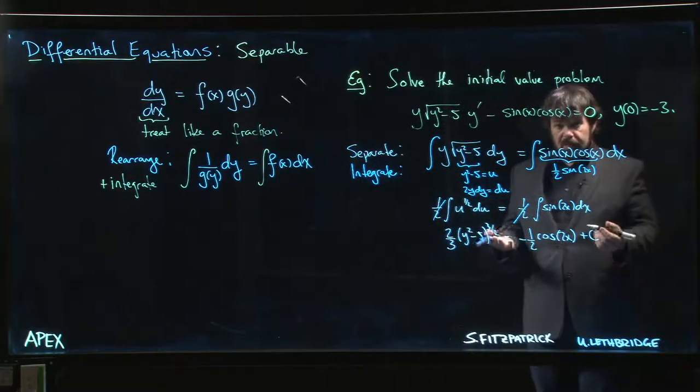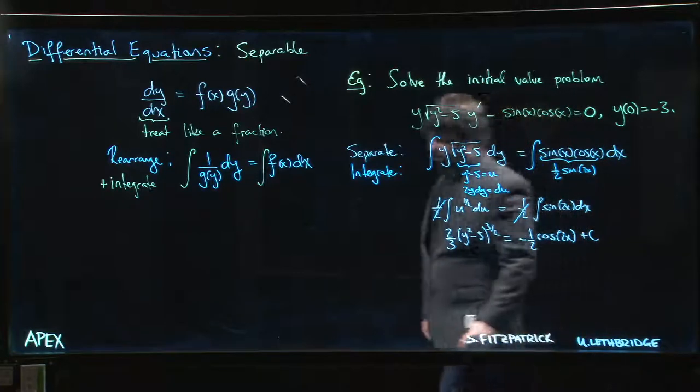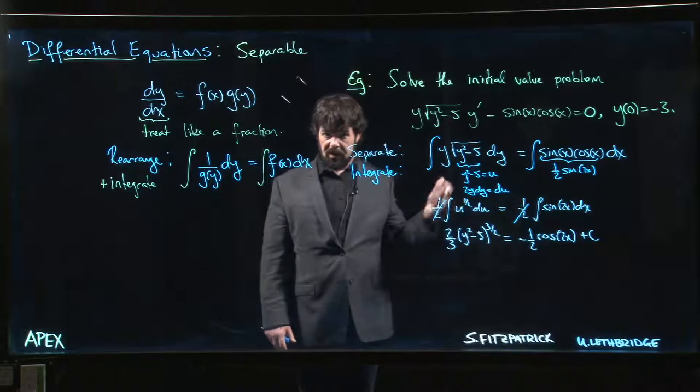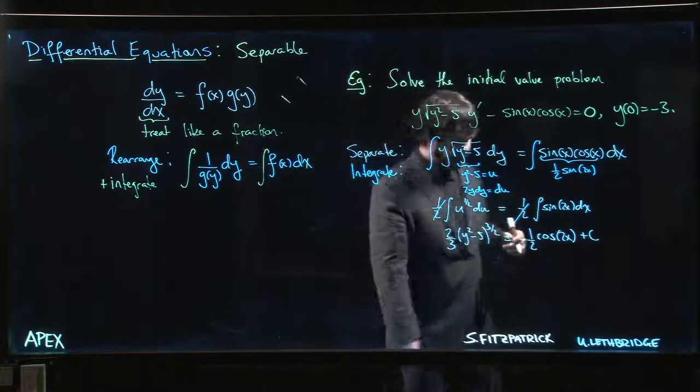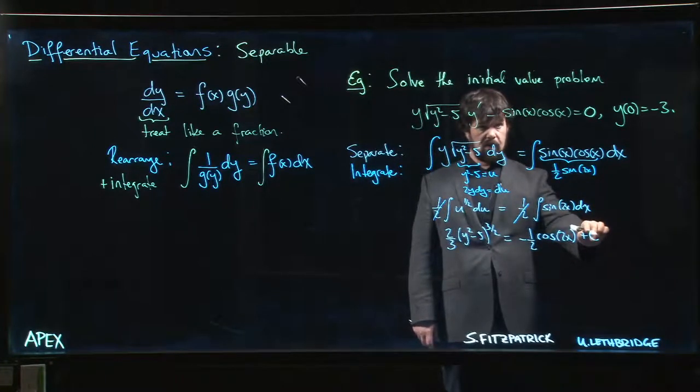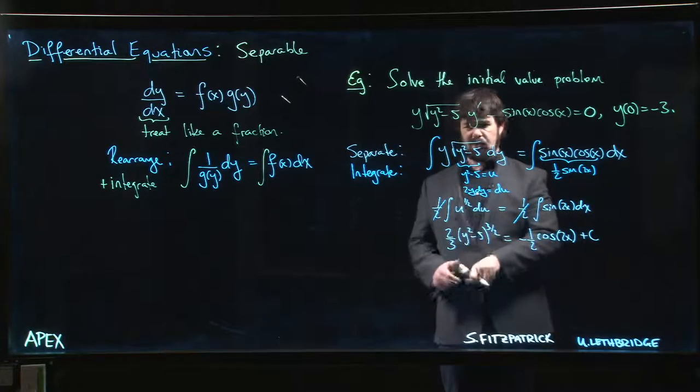You can do it that way. If you want to do it with a substitution you get a slightly different answer. There's lots of ways you can play around and get an answer. That's the one I went with. Now at this point we want to figure out what that constant is. It's not really convenient to solve for y in this particular example.